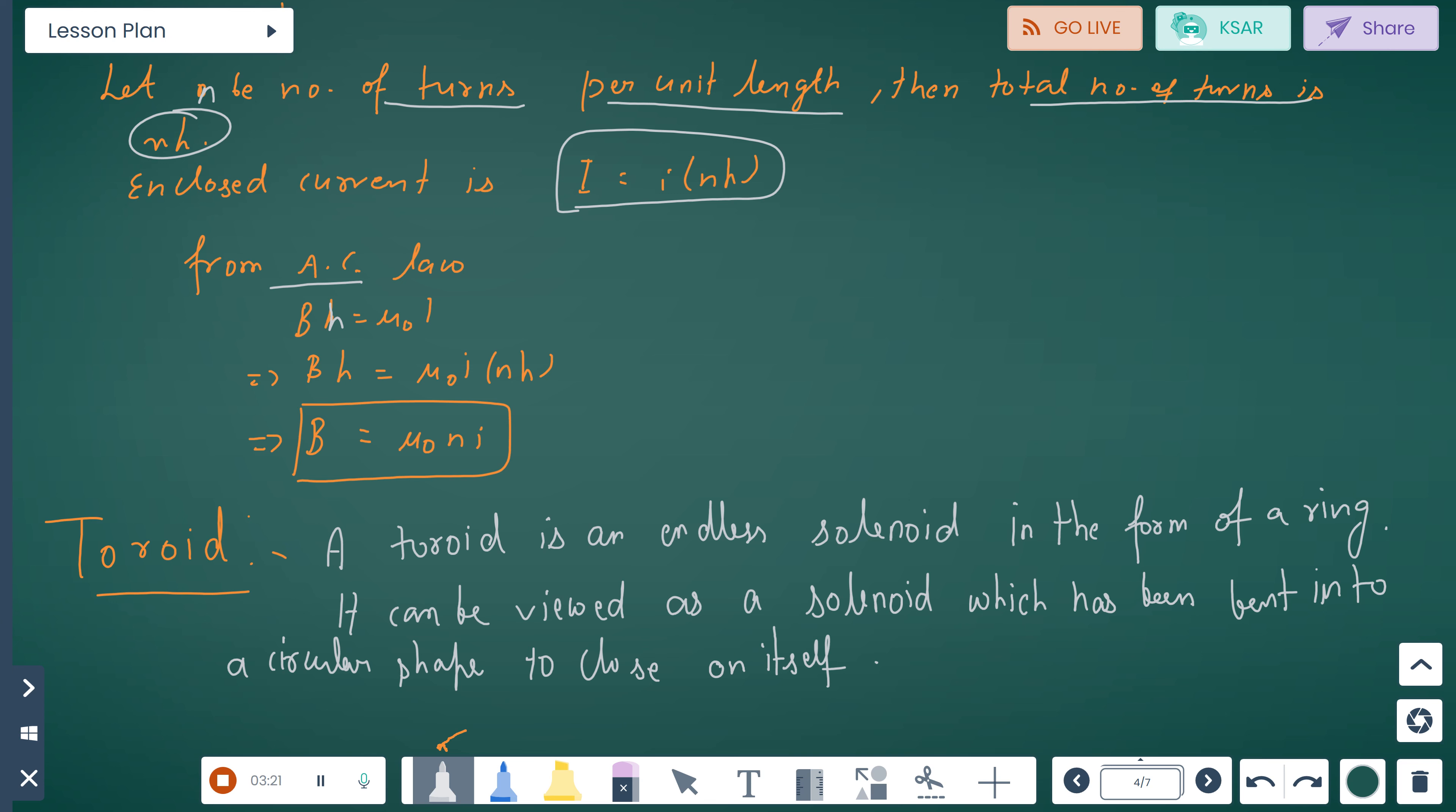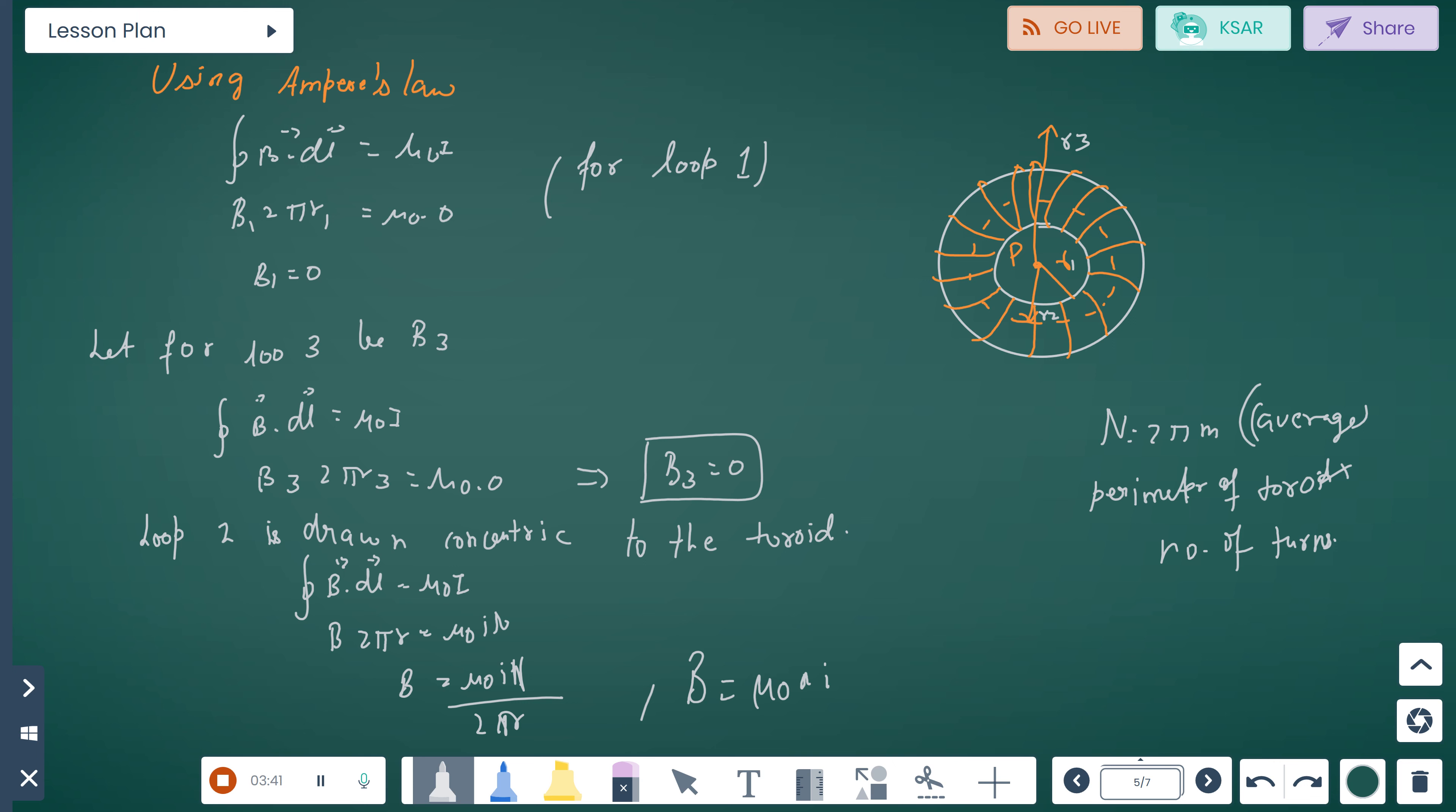For toroid, a toroid is an endless solenoid in the form of a ring. It can be viewed as a solenoid which has been bent into circular shape to close on itself. It's like a ring. We have R₁ for loop 1, R₂ for loop 2, and R₃ for loop 3.